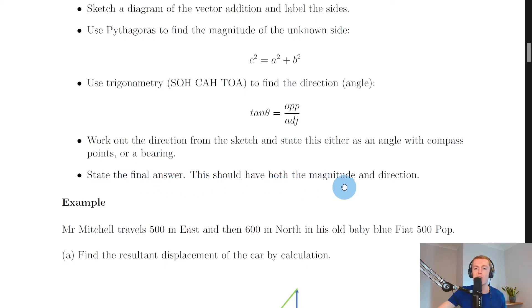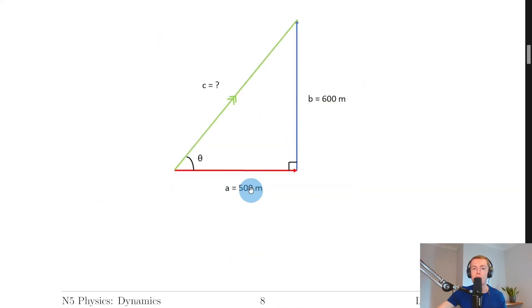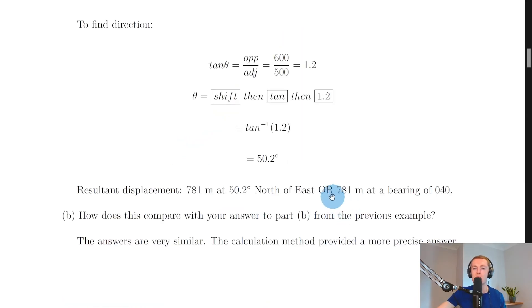So because we know this is 50.2 degrees, we could say that our resultant displacement is 781 meters at an angle of 50.2 degrees north of east. We've got north up here, this red arrow is pointing east, so that means we can describe where the resultant vector is as 50.2 degrees north of east.